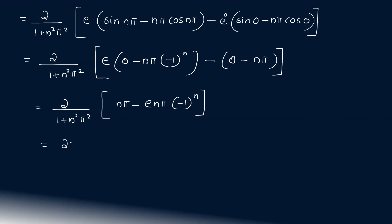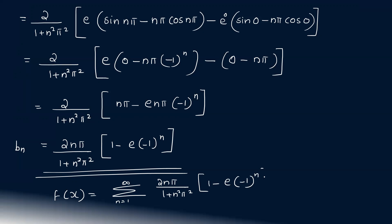Therefore, f(x) = summation n=1 to infinity of [2nπ/(1 + n²π²)] into [1 - e(-1)^n] sin(nπx).